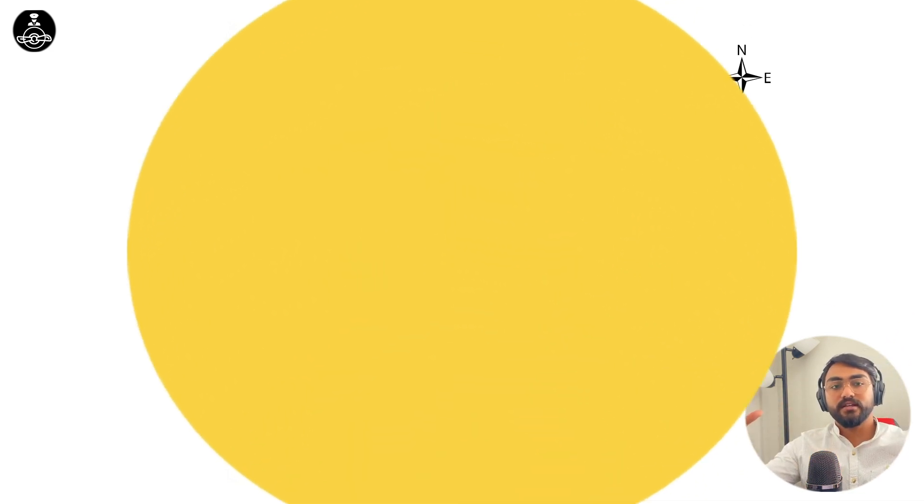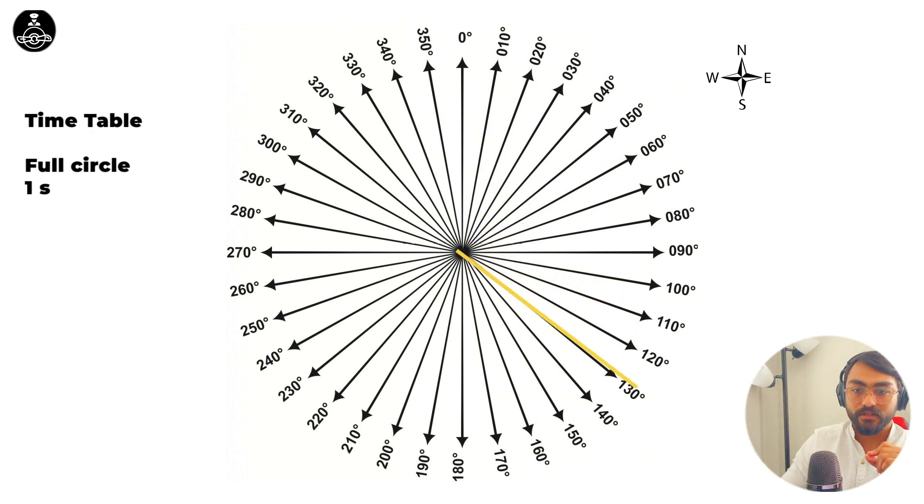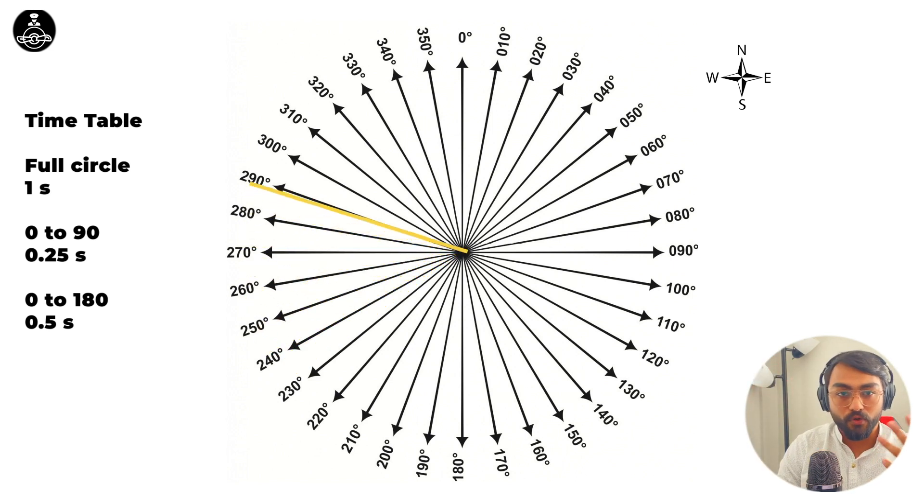In this example, the variable phase signal takes around one second to make the whole circle from 360 back to 360. This means to reach 090 it will take 0.25 seconds, to reach 180 it will take half a second, to 270 it will take 0.75 seconds, and back to 360 will be one second. If our aircraft is on 090 from the station, when the variable phase reaches north, the VOR